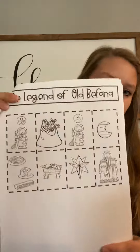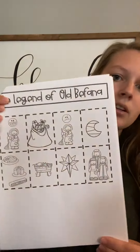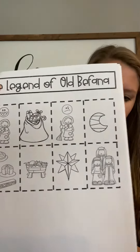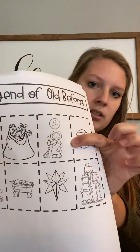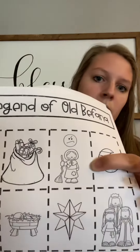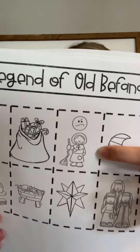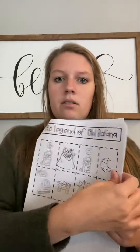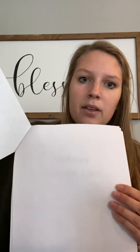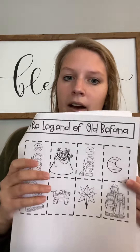Let's do the first one together. If you look at the pictures and think back to the story, it talked about at the beginning how Old Befana wasn't very friendly, how she didn't let people in her house, and everyone kind of thought she was crazy. So our first picture that we would sequence is the one of her with her broom and the confused look on her face. You would cut that out and glue it on the next page as the first picture. Then you'll think about the story and put the rest in order of how things happen.